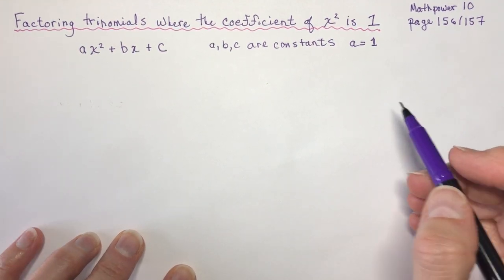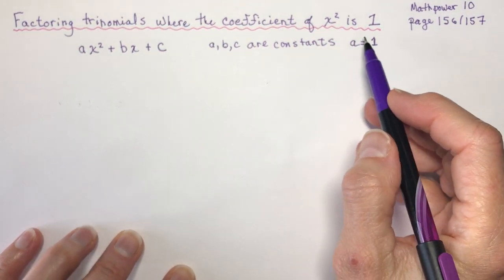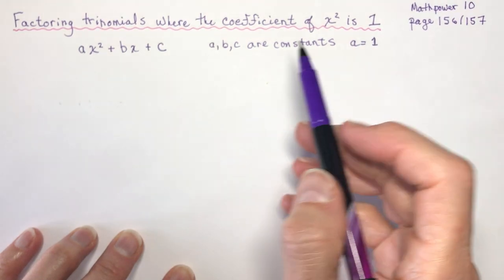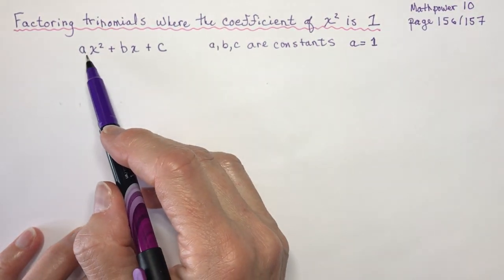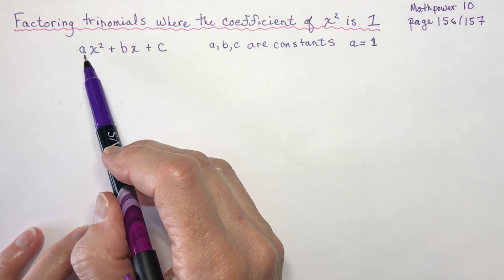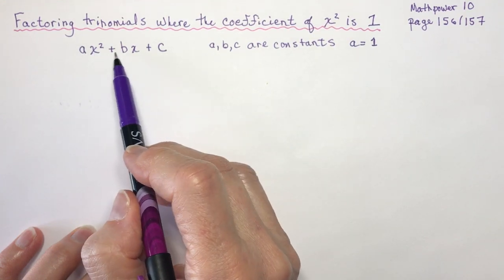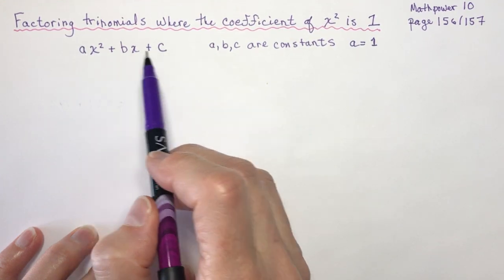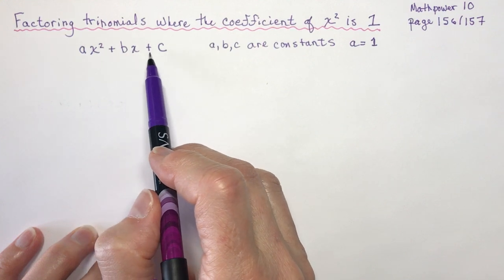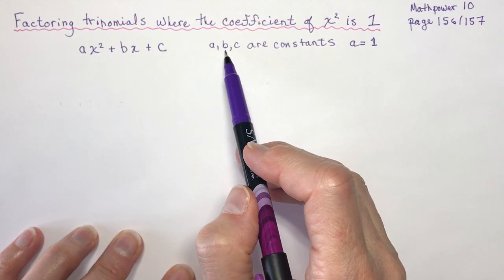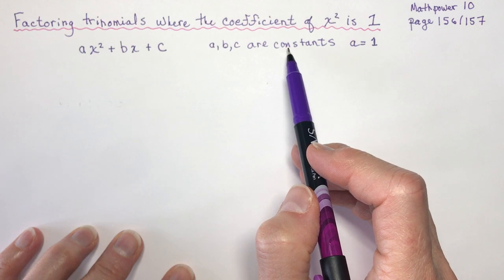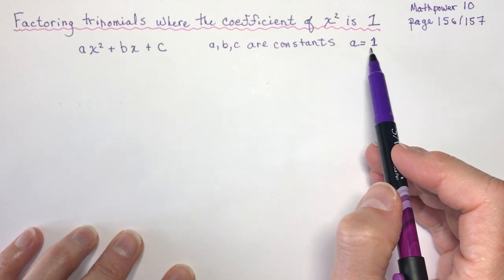Factoring trinomials where the coefficient of x squared is 1. A trinomial has three terms. We'll be working with the form ax squared plus bx plus c, where a, b, and c are constants and a is equal to 1.